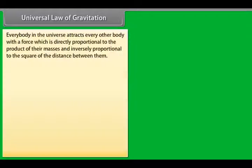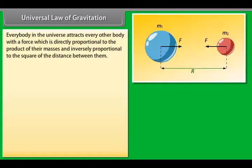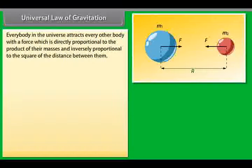Universal law of gravitation: everybody in the universe attracts every other body with a force which is directly proportional to the product of their masses and inversely proportional to the square of the distance between them.